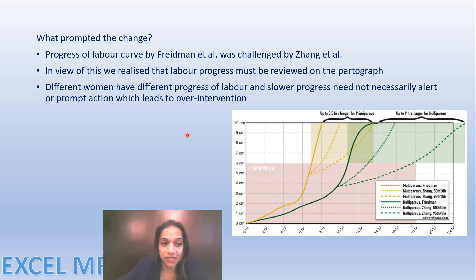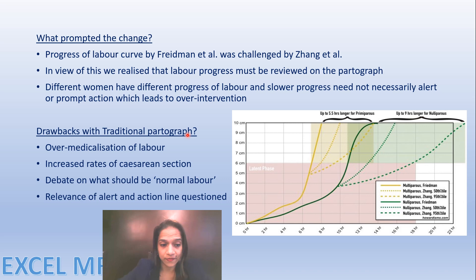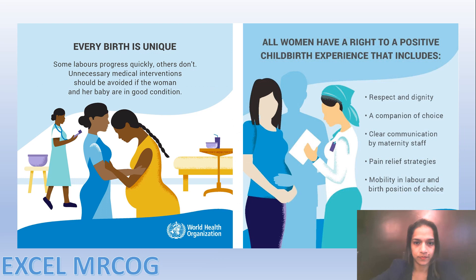The progress of labor curve by Friedman et al. was challenged by Zhang et al. Labor progress must be reviewed on a partograph; different women have different progress, and slower progress need not prompt action leading to over-intervention. Drawbacks of the traditional partograph include over-medicalization of labor, increased caesarean section rates, debate on normal labor, and the relevance of alert and action lines is now questioned since labor as slow as the 95th centile can still be normal.